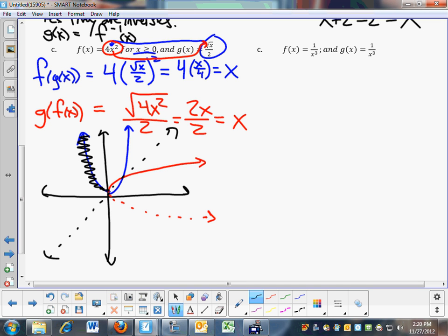For x greater or equal to 0, so you would say, from 0 to infinity is the domain? Yeah, that would be fine. So, square root of x over 2 is the inverse of 4x squared, for values 0 to infinity. The domain has been restricted. We're fine. Good. OK, last problem.